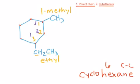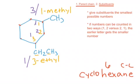I could have 1-methyl and 3-ethyl, or I could have 3-methyl and 1-ethyl. How do I choose? Well, here's the rule: First we give the substituents the smallest possible numbers, which we determined were 1 and 3 here. And second, if the numbers can be counted in two ways (1, 2 versus 2, 1), the earlier letter gets the smaller number.